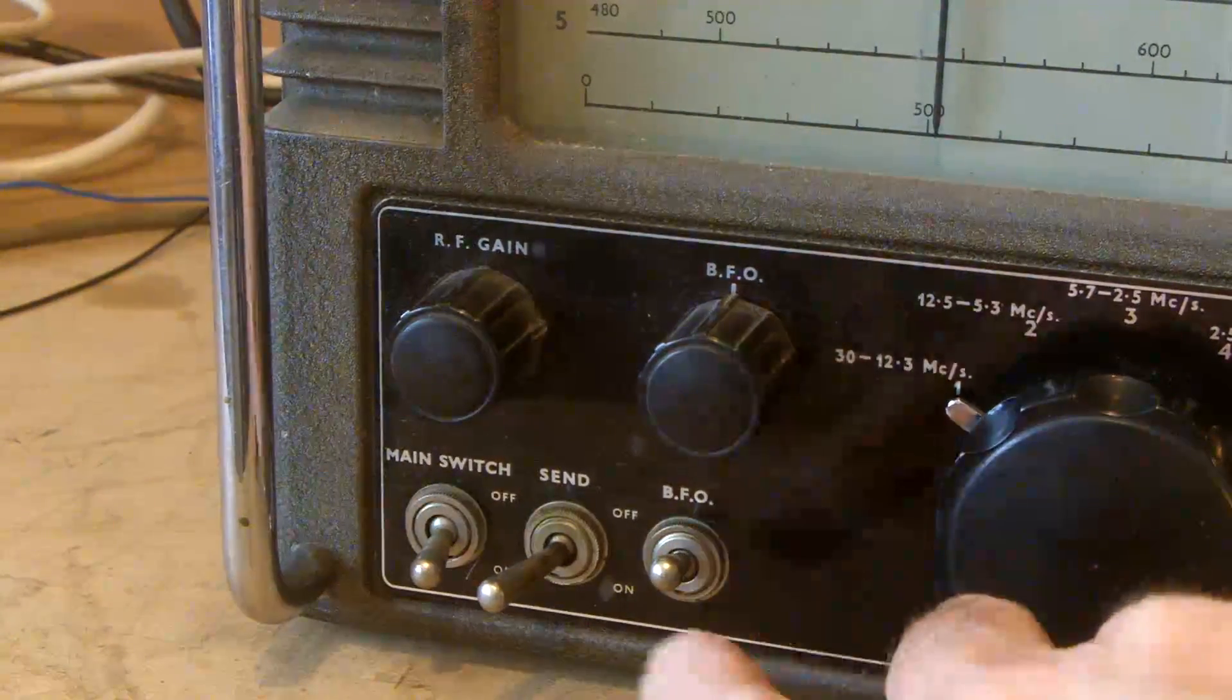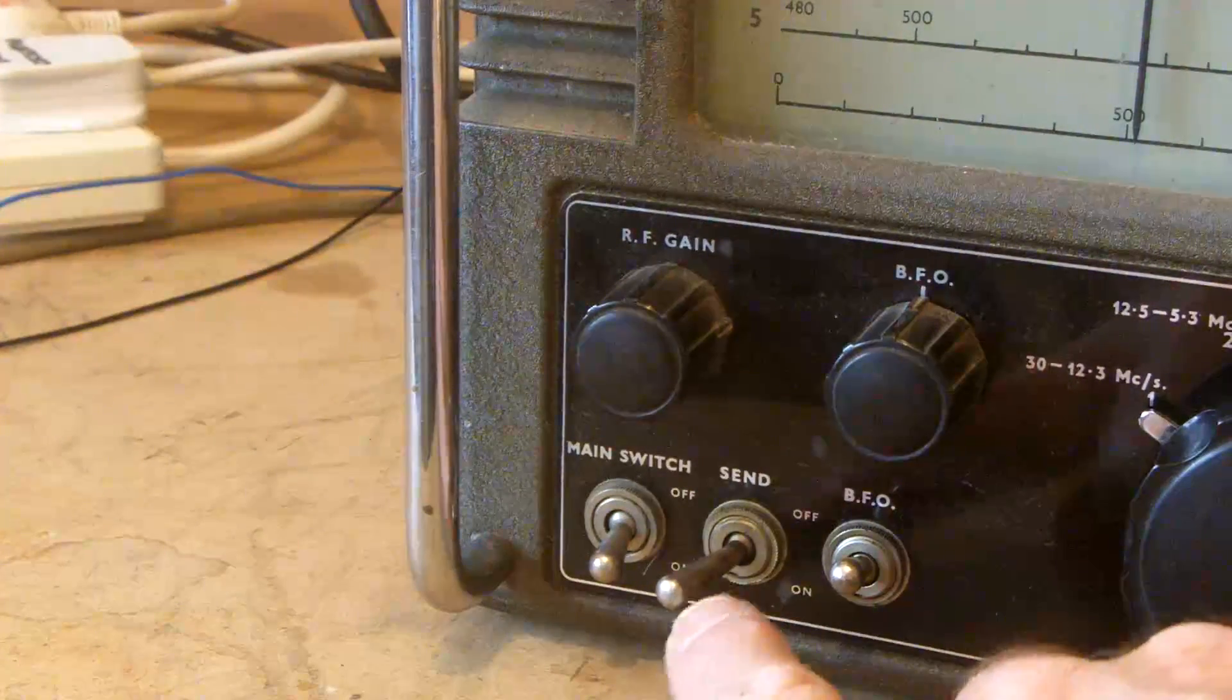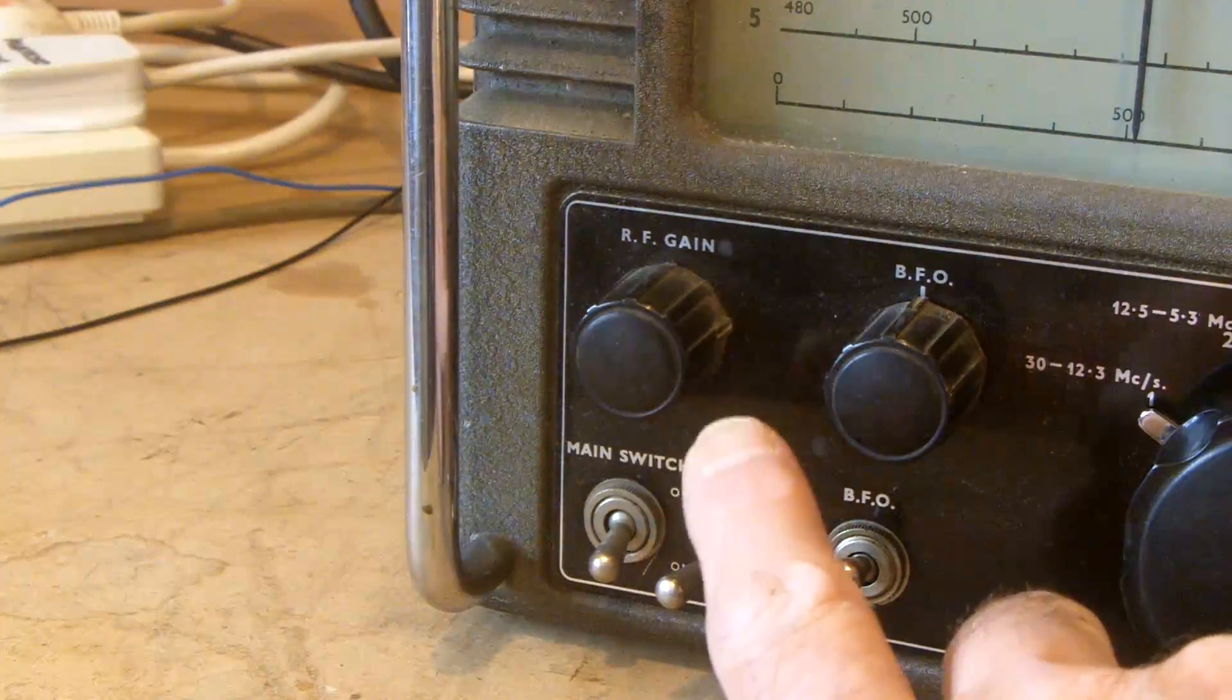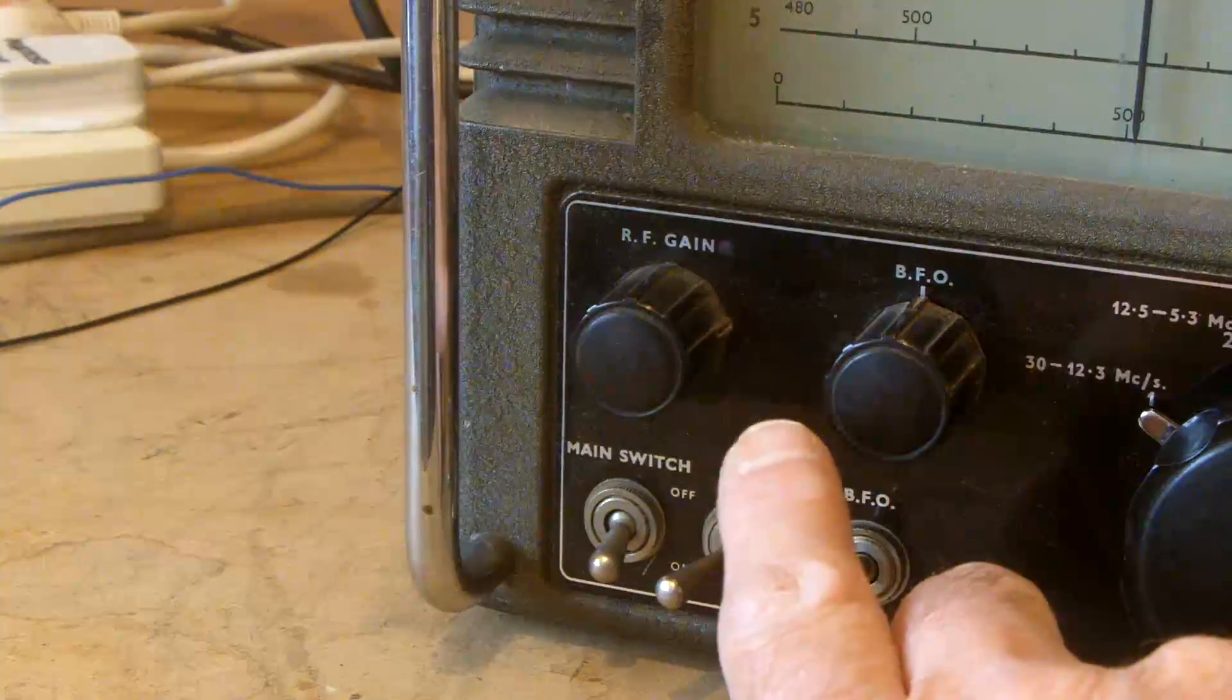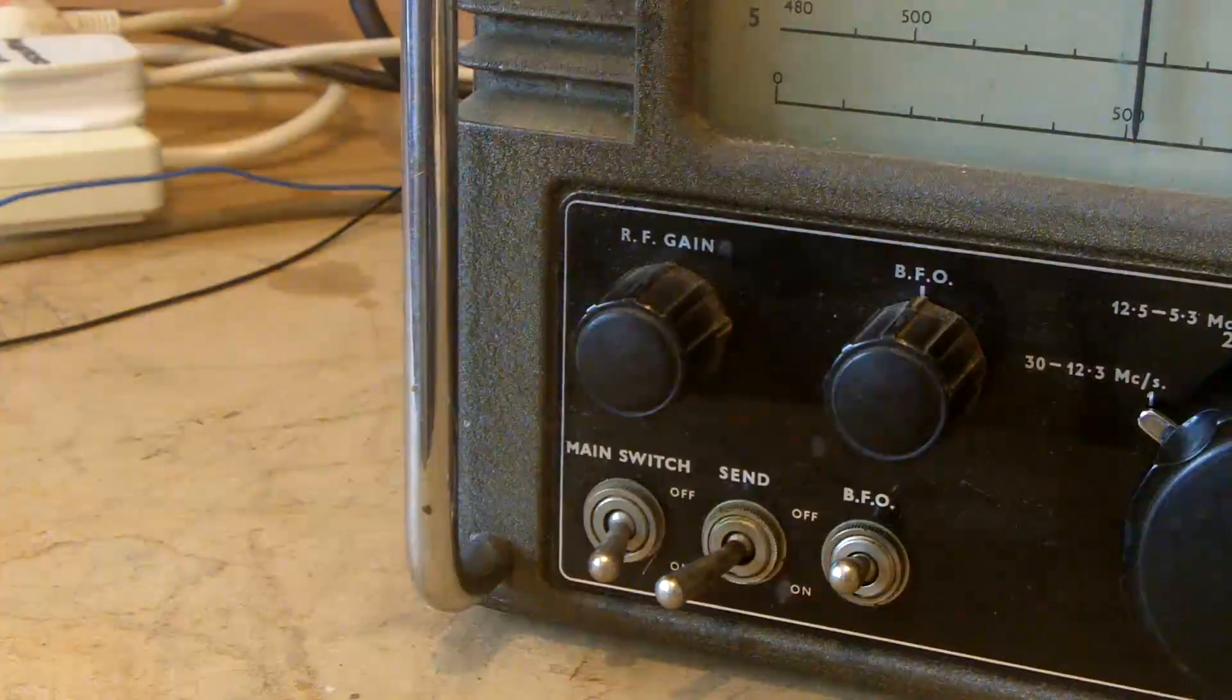Beat frequency oscillator BFO, and that's the on and off. And that's a send that allows you to switch the radio off if it's used with a transmitter, or switch the receiver off anyway. RF gain and the mains power switch.